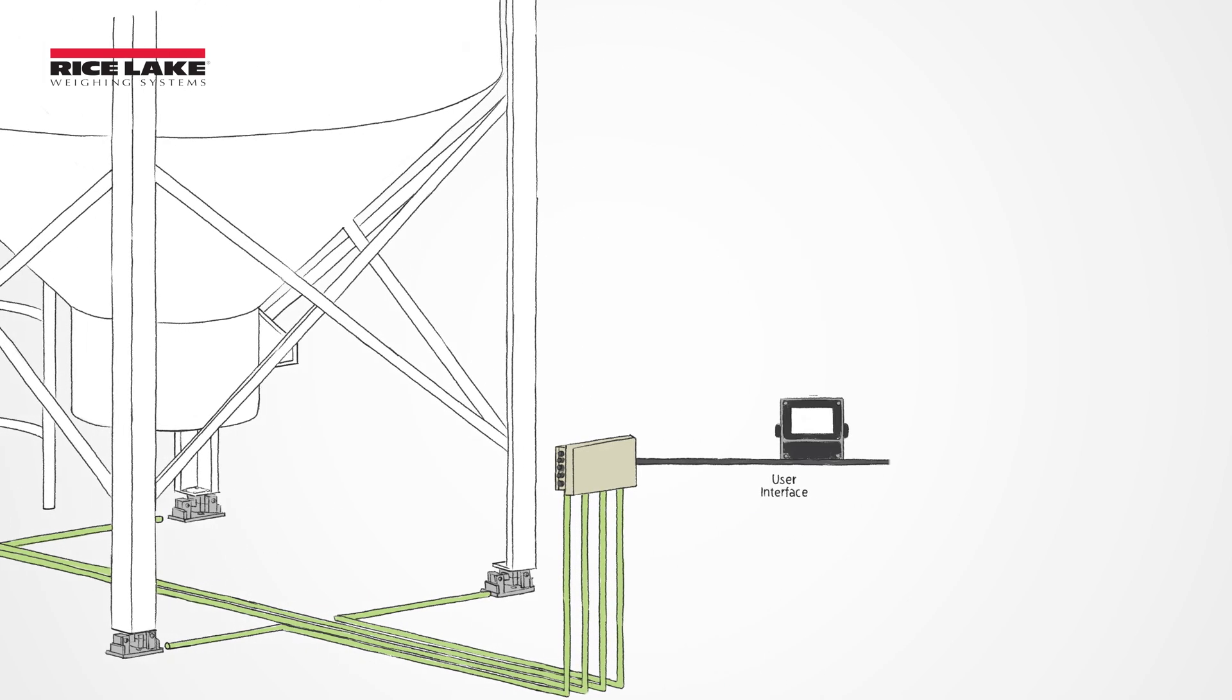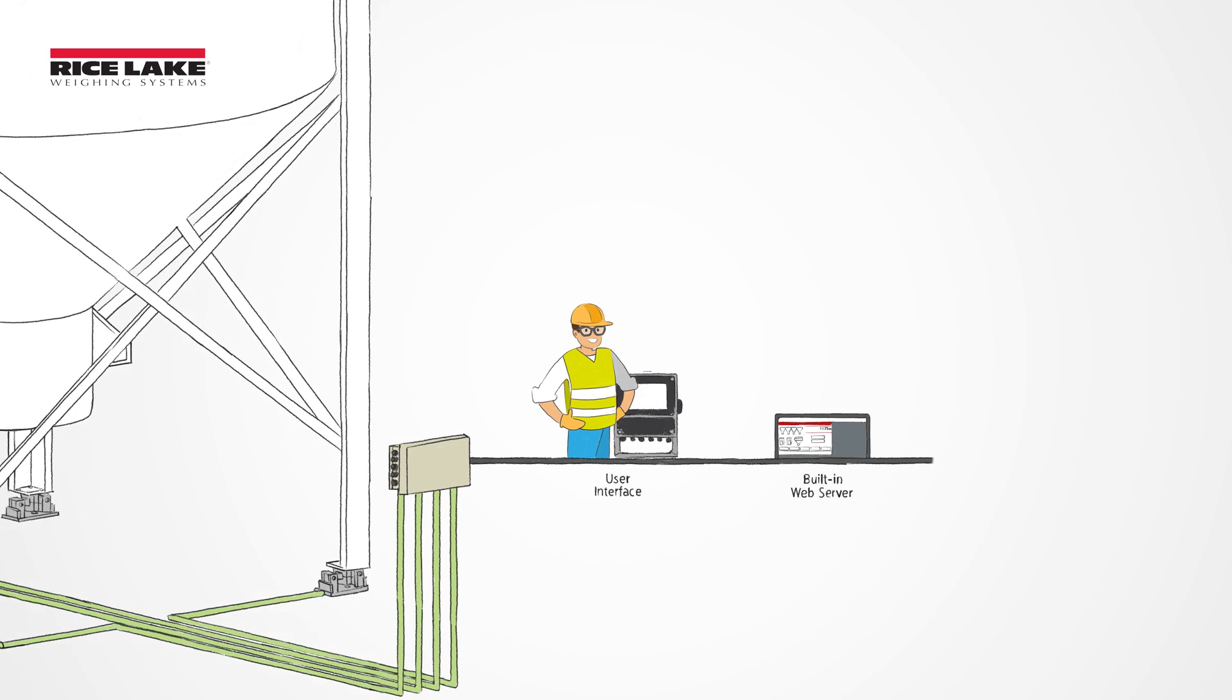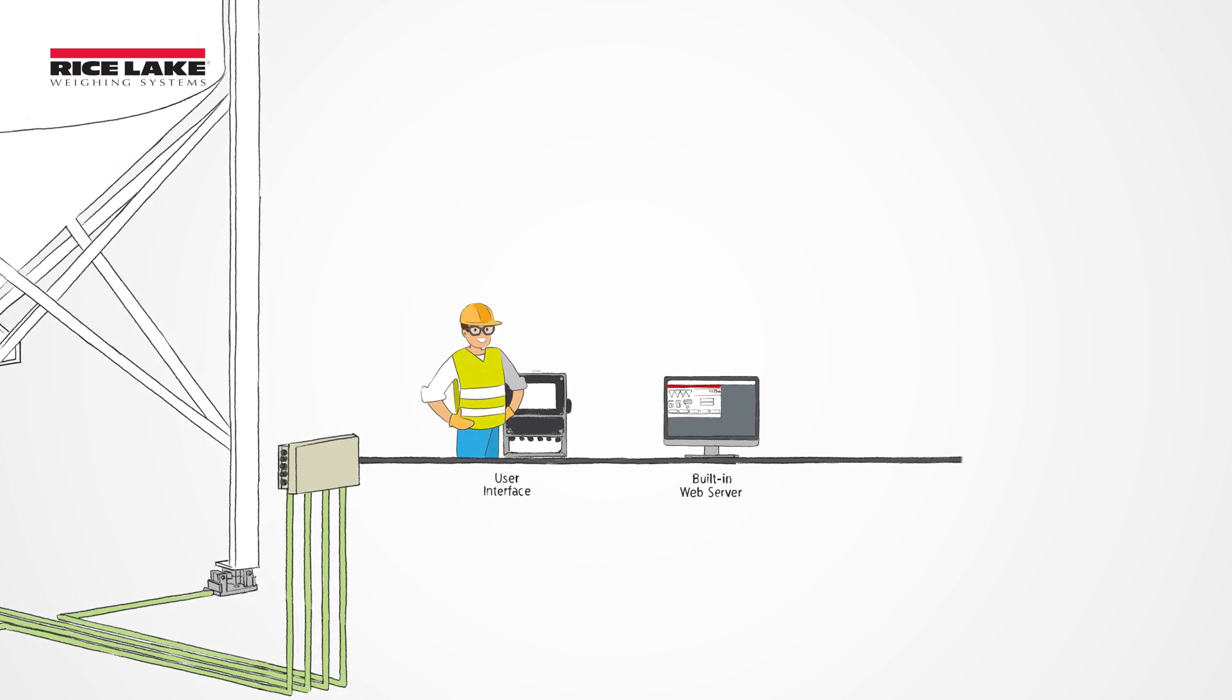Since all load cell connections come into this one box, a junction box is the most convenient place to troubleshoot system errors.